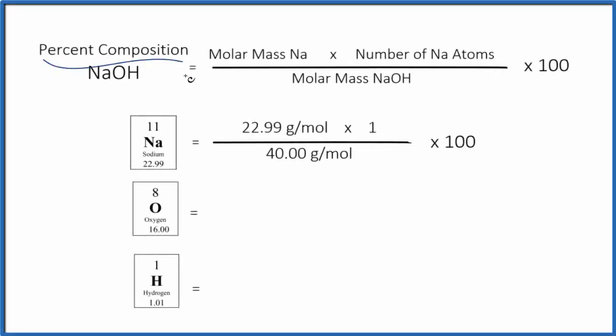Let's calculate the percent composition by mass for NaOH. That's sodium hydroxide. And we're going to calculate the percent composition for each element here in sodium hydroxide. Let's start with the sodium.